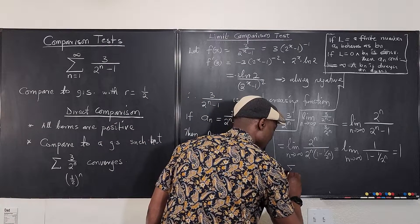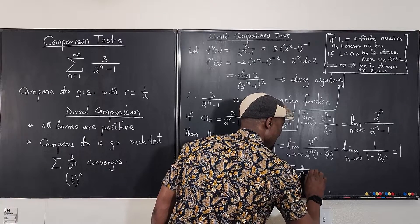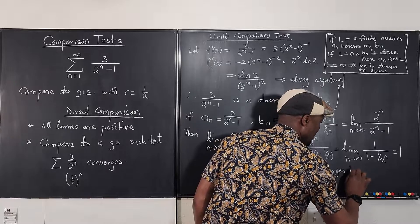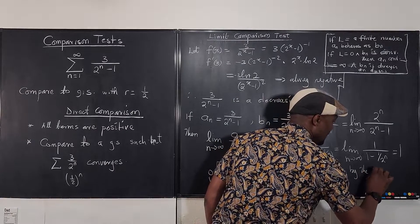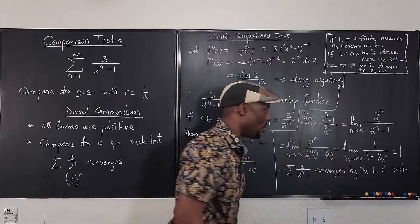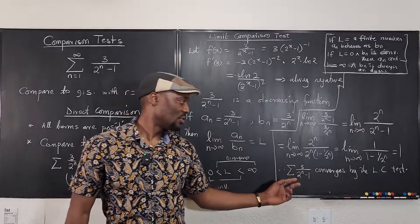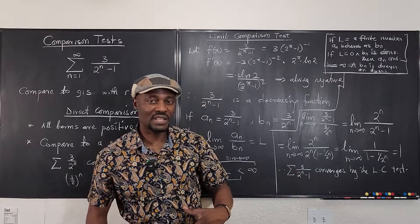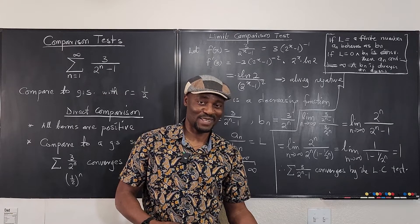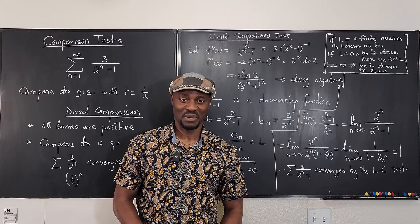Therefore, the series 3 over (2^n minus 1) converges by the limit comparison test. It is important that you write this statement at the end — it shows that you have a reason for making the claim. See you in the next video; never stop learning — those who stop learning have stopped living.